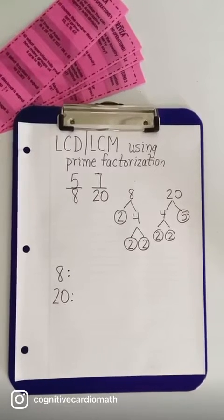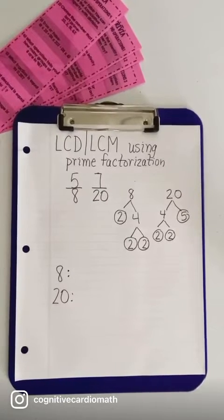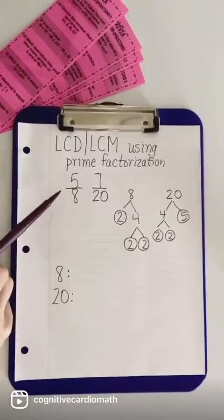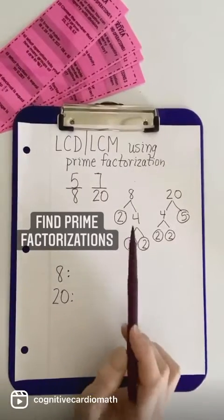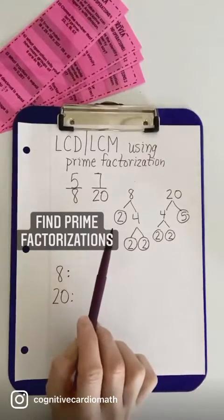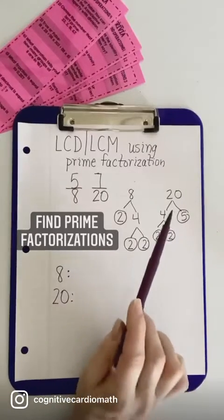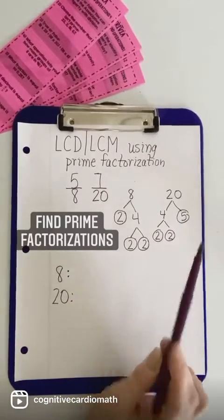Let's look at finding LCD or LCM using prime factorization. I have the fractions 5 eighths and 7 twentieths here, and I already have the factor trees to show their prime factorizations. 8 is 2 times 2 times 2, and 20 is 2 times 2 times 5.